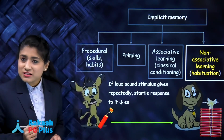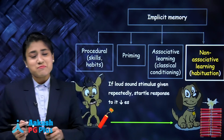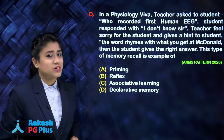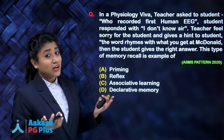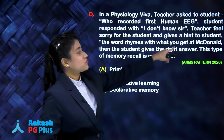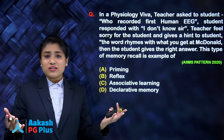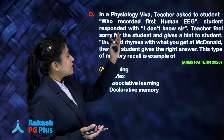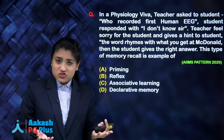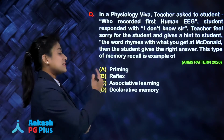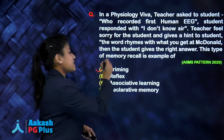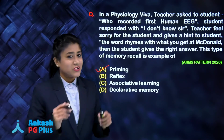You should know all four subtypes of implicit memory. Coming back to the original question: the word rhymes with what you get at McDonald's — burger — and the scientist who discovered the human EEG is Berger. So this is priming. The answer is A — priming.